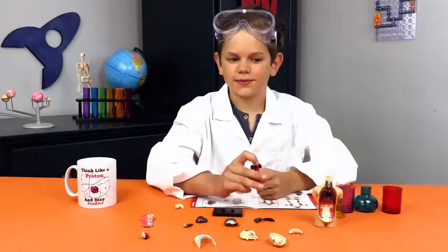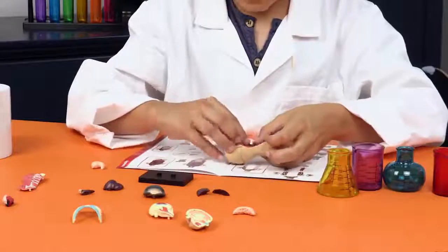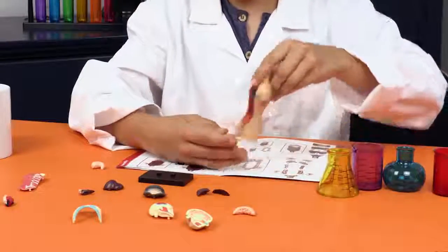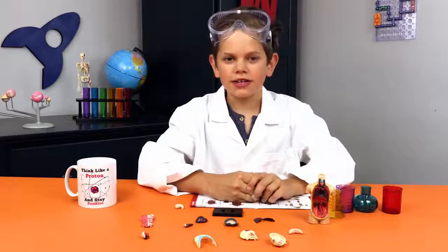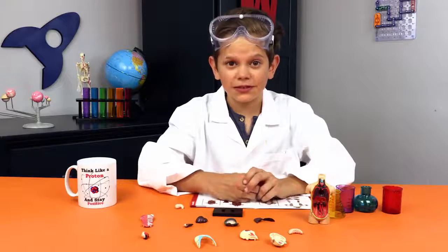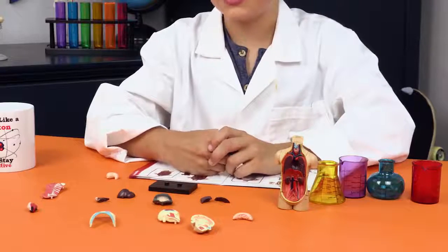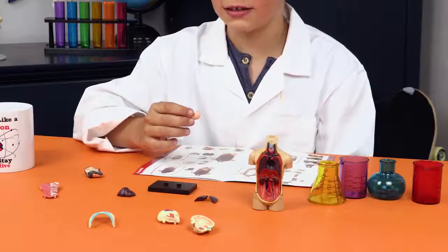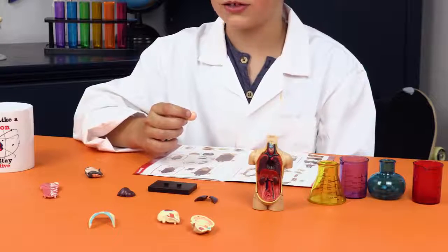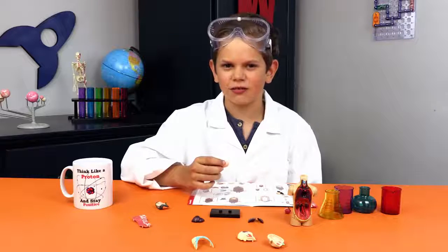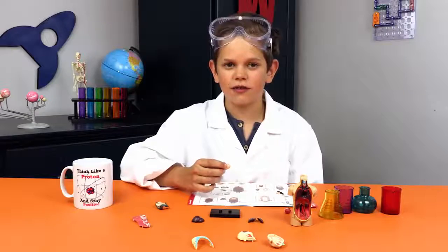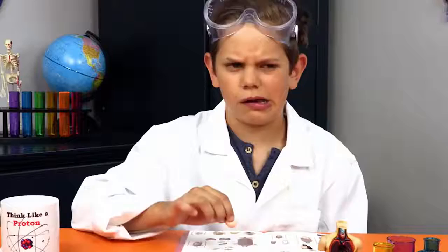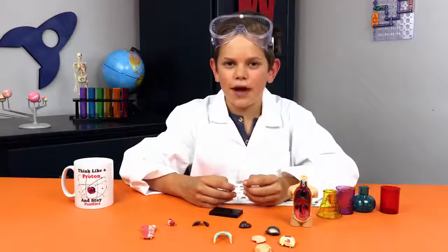I'll start with the kidneys. In a single hour the kidneys receive 12 pints of blood. The blood is filtered and the waste is removed from it. Next up is the stomach. It contains strong acid to digest your food and to stop it from digesting itself it produces a new layer of mucus every two weeks.